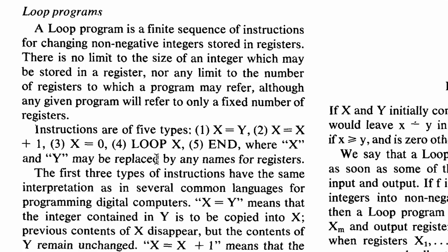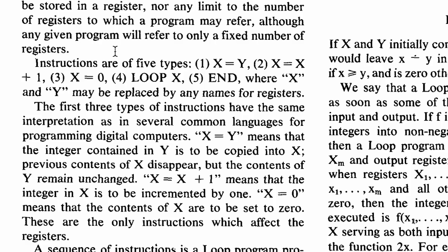A loop program is a finite sequence of instructions for changing non-negative integers stored in registers. There's no limit to the size of an integer stored in a register, nor any limit to the number of registers. There are only five types of instructions: assignment (x equals y), incrementing (x equals x plus one), setting x to zero, looping (loop x), and marking the end of the loop. There is nothing else to this language.